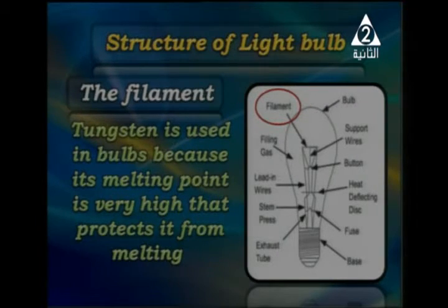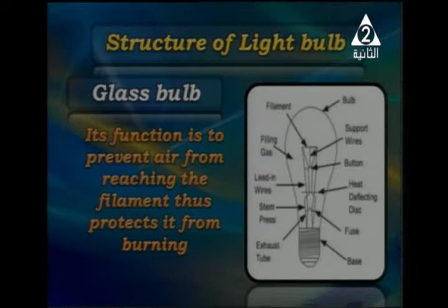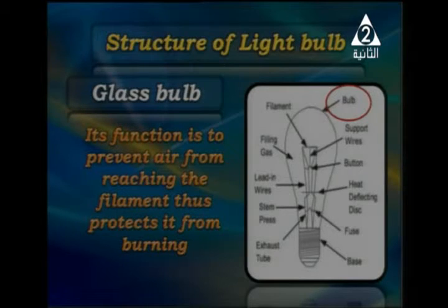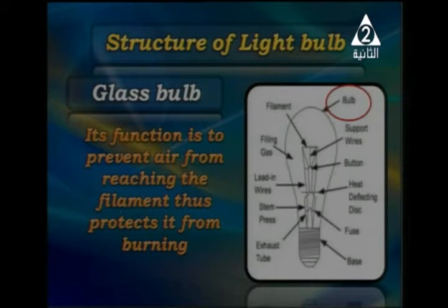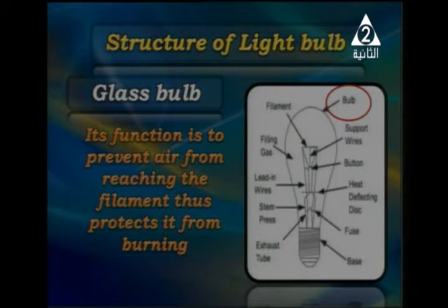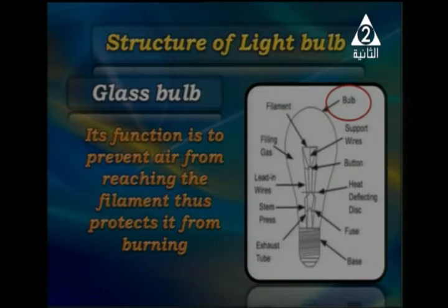Tungsten is used in the bulb because its melting point is very high, protecting the lamp from melting and damage. Another part of the light bulb is the glass bulb. Its function is to prevent air from reaching the filament, thus protecting it from burning.